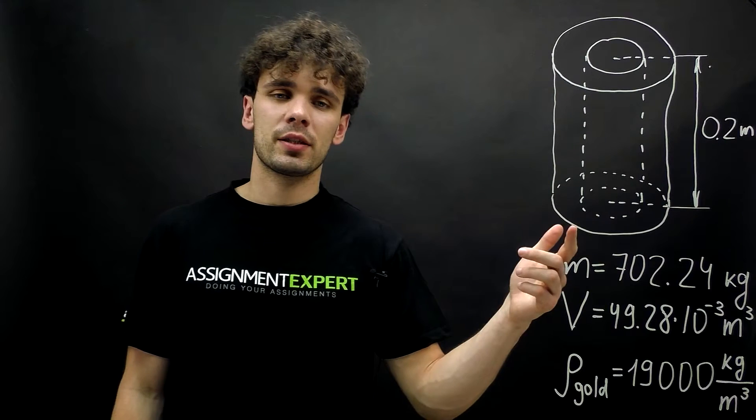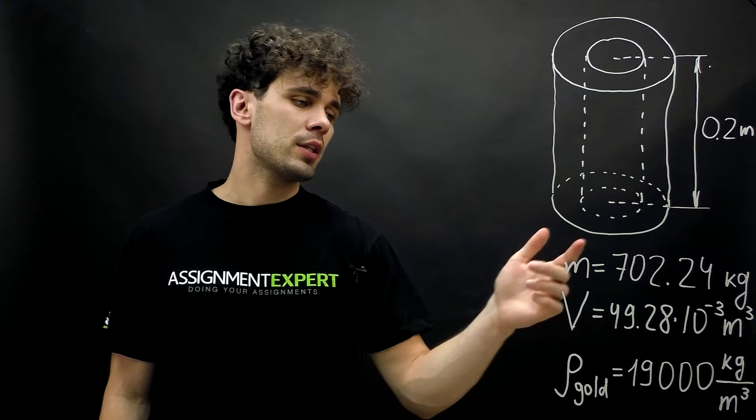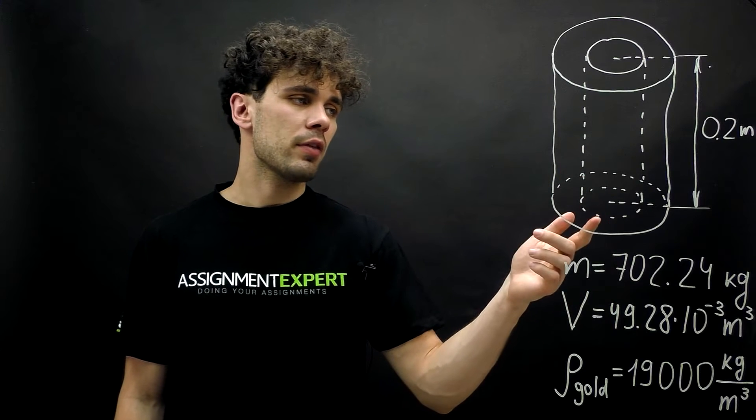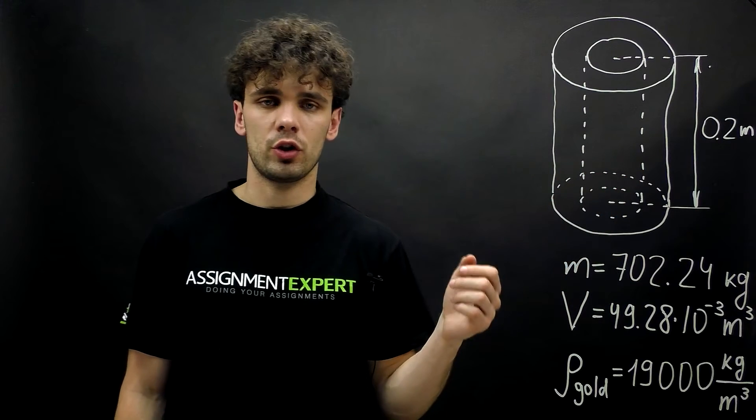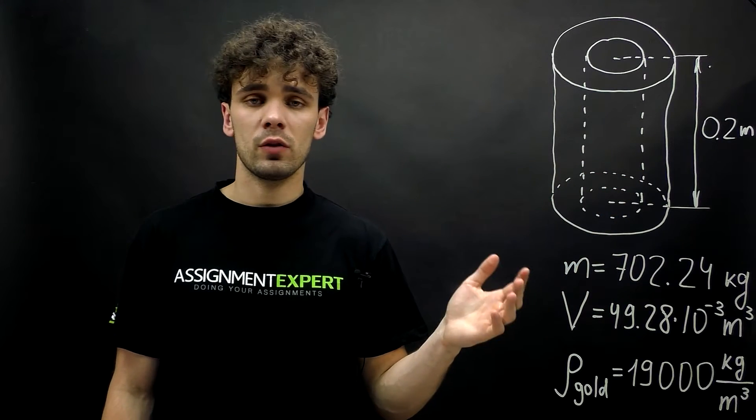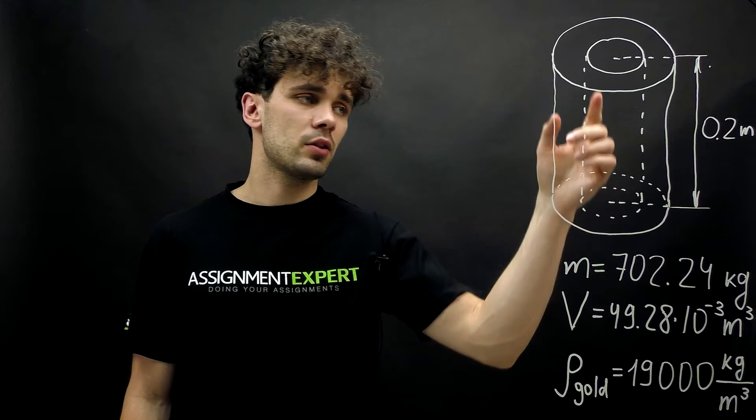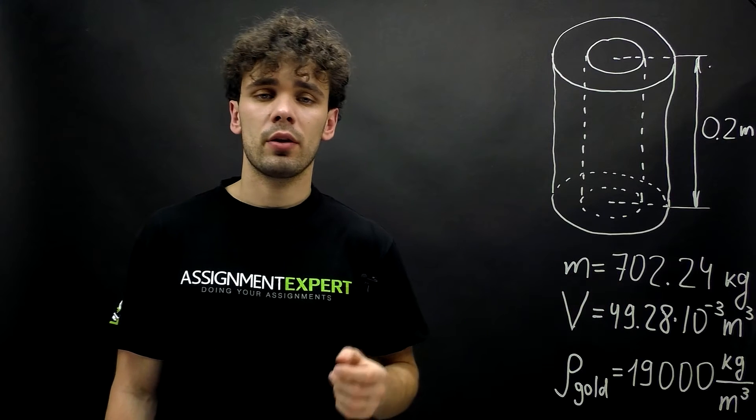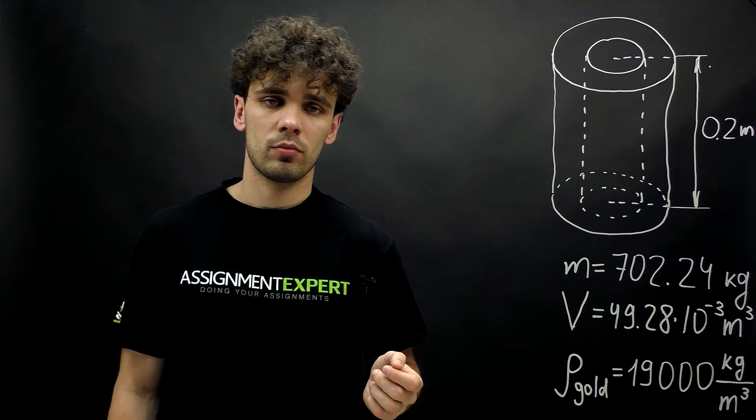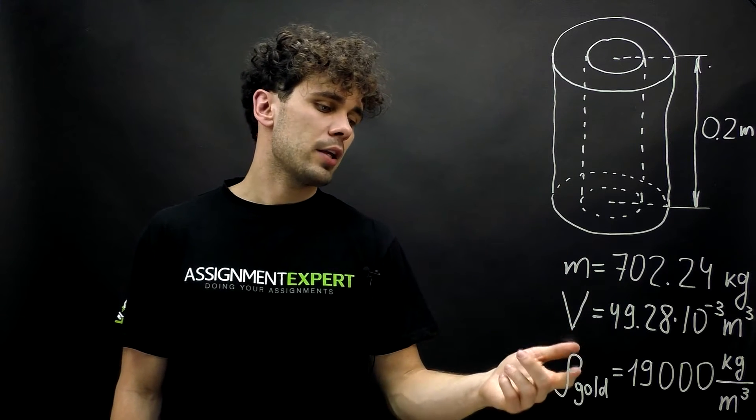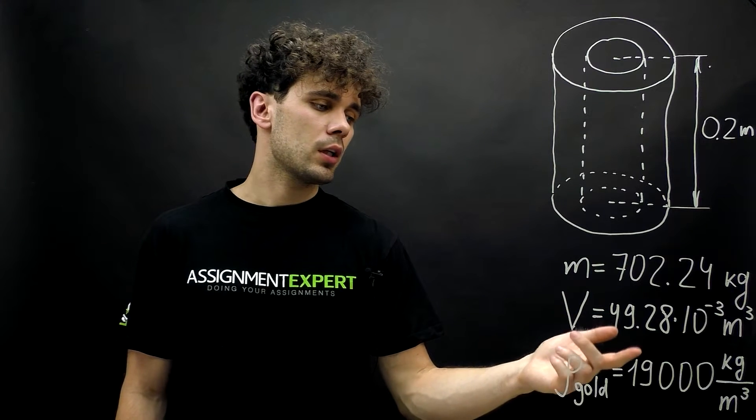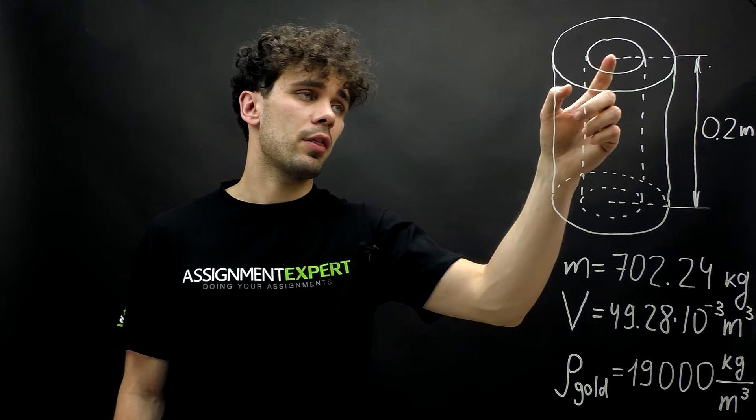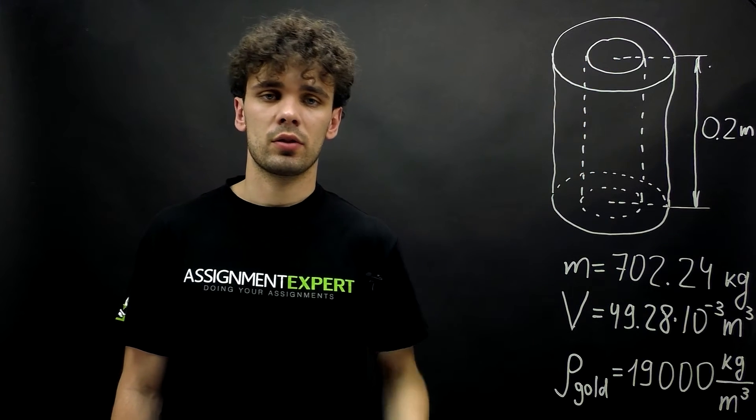We have a hollow body cylinder made of gold that weighs 702.24 kilos. The height of this cylinder is 0.2 meters. We know that the total volume of this cylinder and its inner cavity is 49.28 times 10 raised to the negative third meters cubed. We know that the density of gold is 19,000 kilos over cubed meter. Our task here is to find the inner radius of this cylinder.